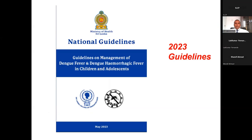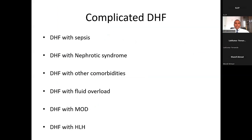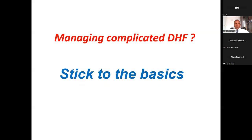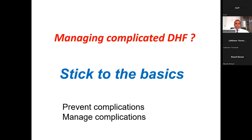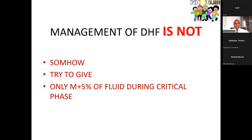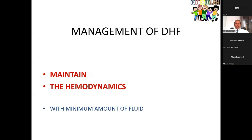The complications I have managed include dengue with sepsis, dengue with nephrotic syndrome, dengue with other co-morbidities, dengue with fluid overload, dengue with multi-organ dysfunction, and HLH. The key principle for managing complicated DHF is to stick to the basics. Management of DHF is not trying to give a minimum amount of fluid — it is maintaining hemodynamics with a minimum amount of fluid. Our aim should be maintaining hemodynamics, but not flooding the patient as in septic shock.